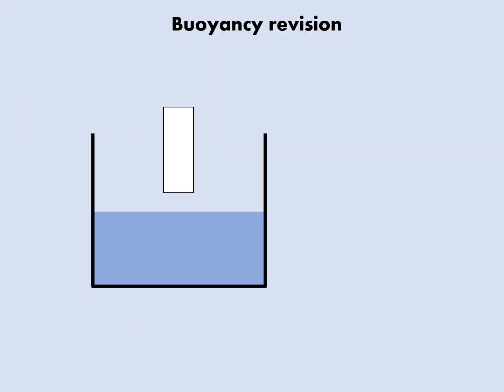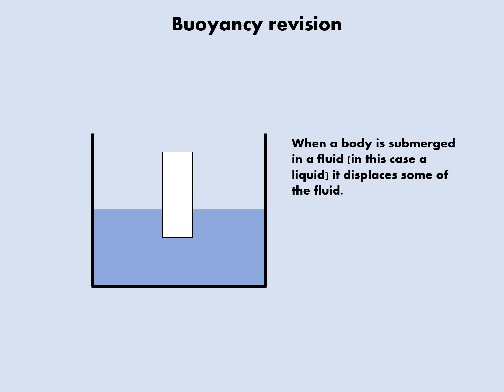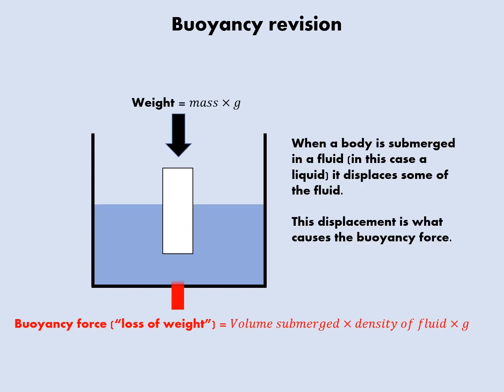When a body is submerged in a fluid there's a buoyancy force, and this is just the product of the volume of the body which is submerged, the density of the fluid, and small g.